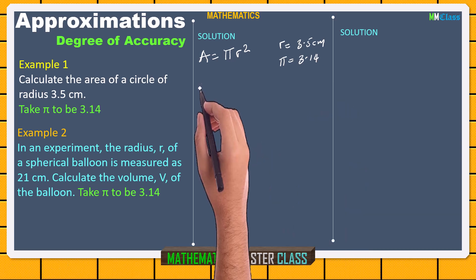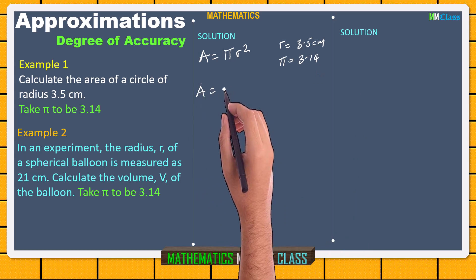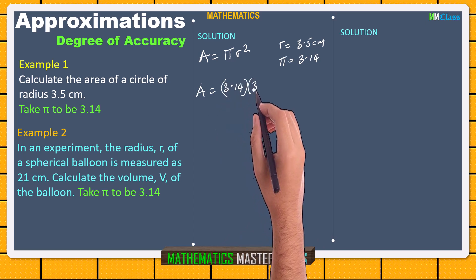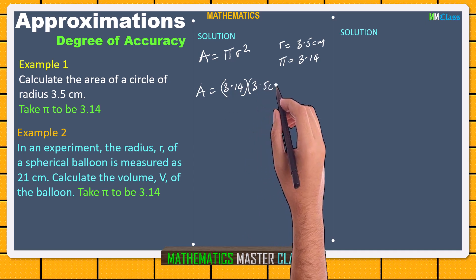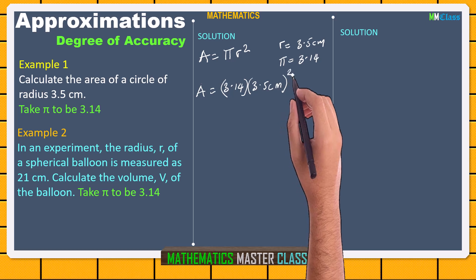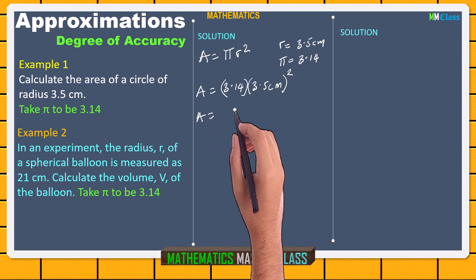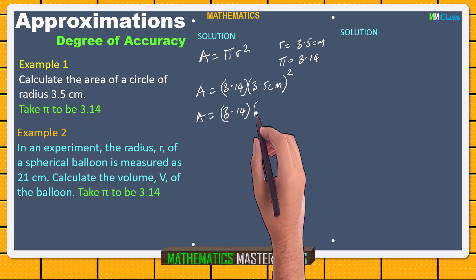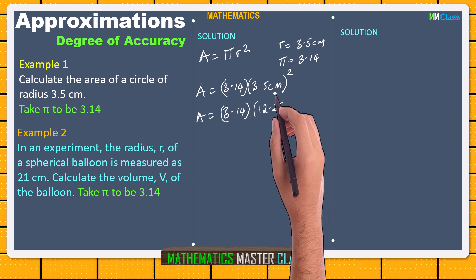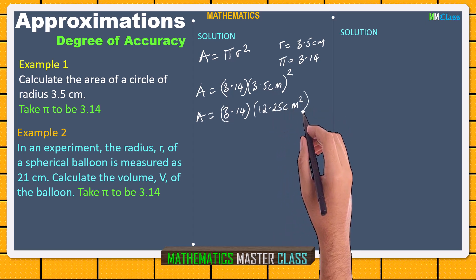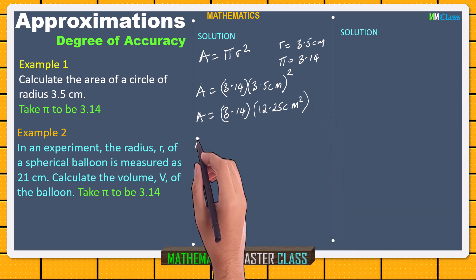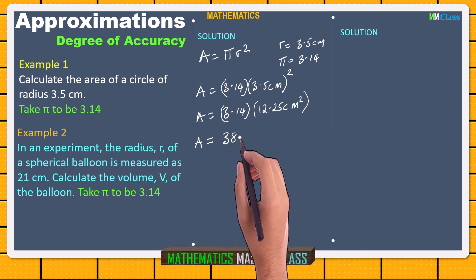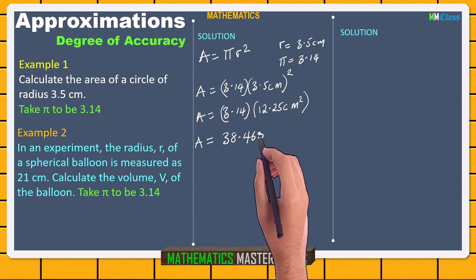If we continue our calculation, we have A = 3.14 times the radius 3.5 cm, squared. If you square 3.5, it gives 12.25, and squaring the unit centimeters gives centimeters squared. So the area of the circle, multiplying these values, gives us 38.465 cm squared.